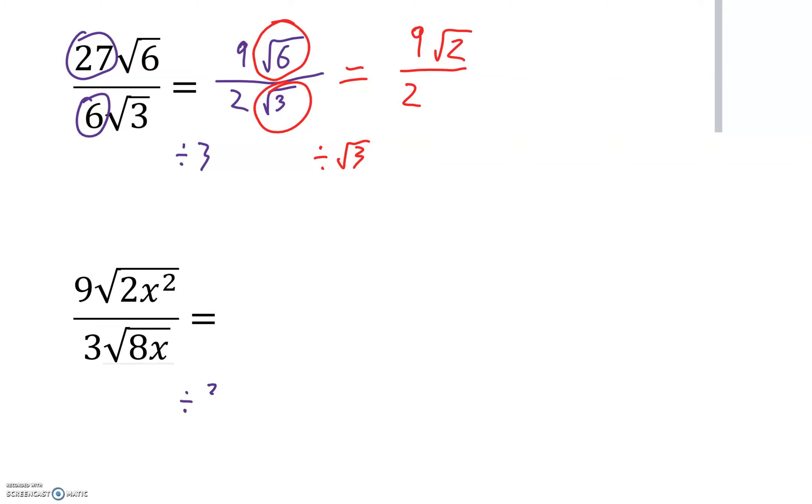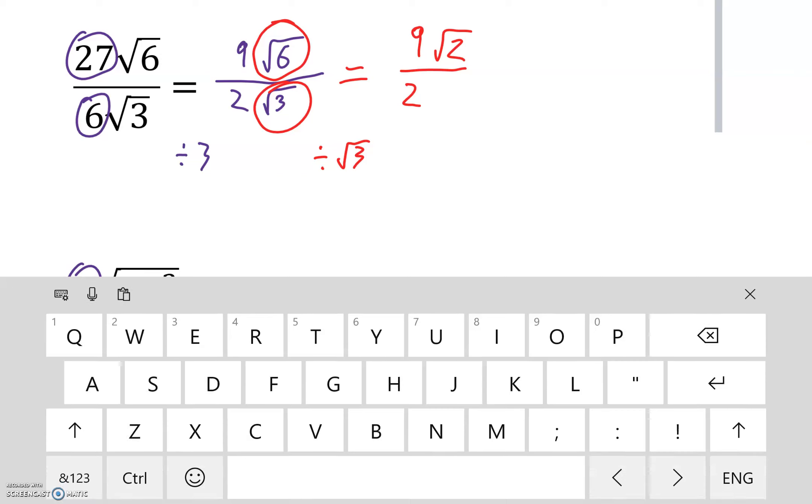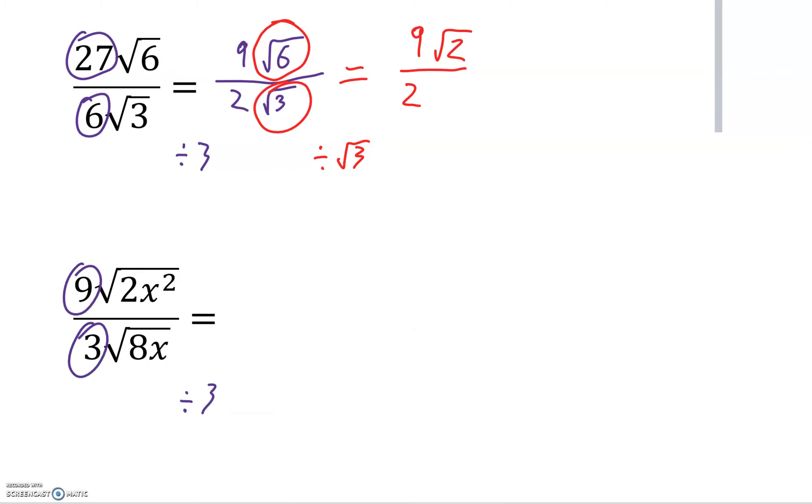First things first, we can divide by three top and bottom as the coefficients. So that gives us three over one. We don't need to write the one.